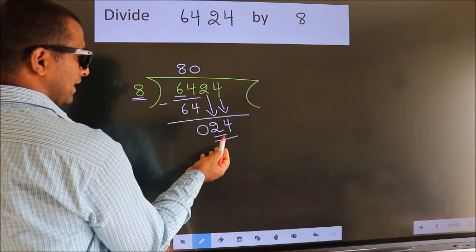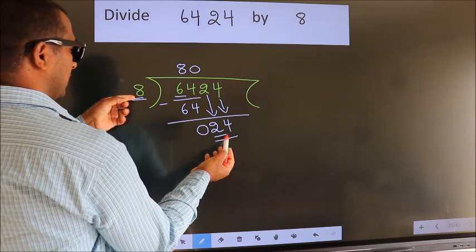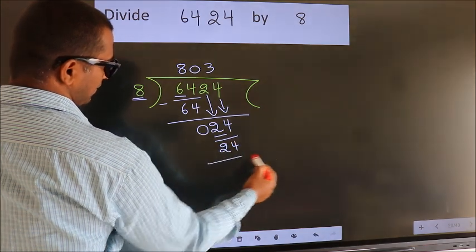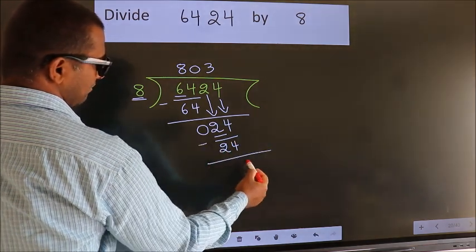When do we get 24? In 8 table. 8 3s, 24. Now, we subtract. We get 0.